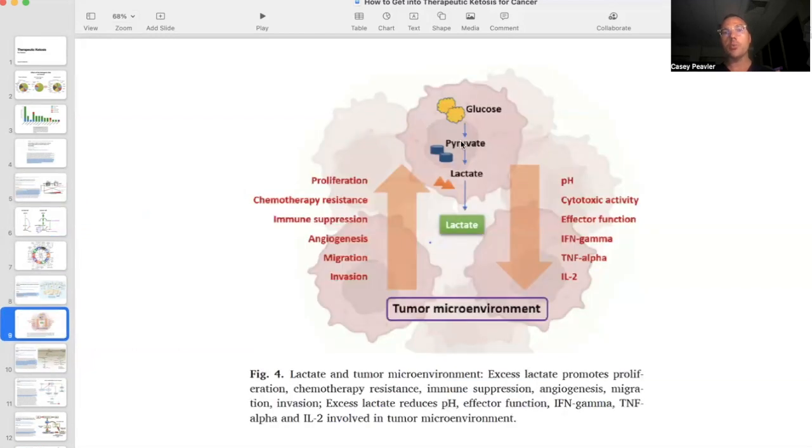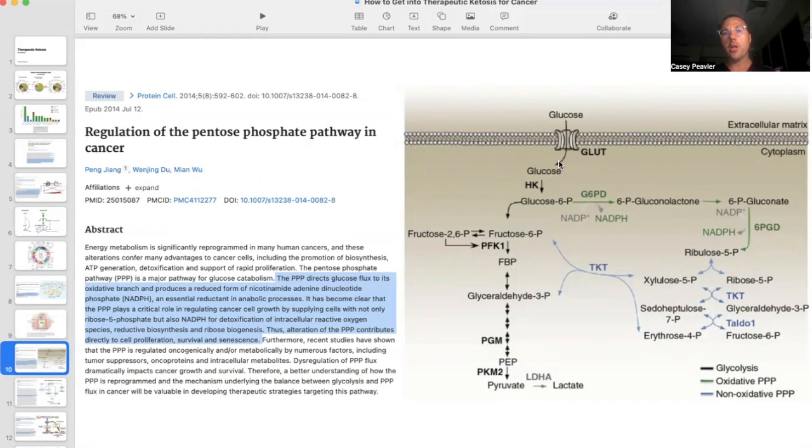Just by lowering blood glucose, we're going to produce less pyruvate and subsequently less lactate, which is going to help fix the acidic tumor microenvironment, which helps protect cancer cells from our immune system and from us being able to overcome it using chemotherapy or natural products.